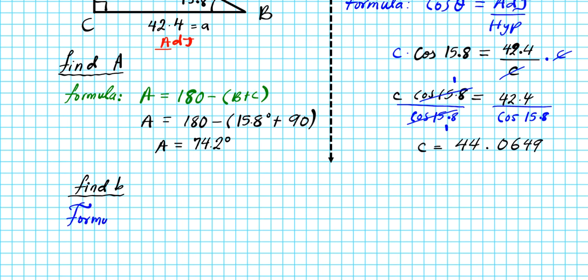So the formula that I speak of, the Pythagorean theorem, is the formula that relates the three sides of the triangle. So we have a squared plus b squared equals c squared. That's your Pythagorean theorem. We know a and c, so we're just going to plug them into the formula to find little b. So a is 42.4. So we have 42.4 squared plus b squared equals the hypotenuse which is 44.0649 squared.